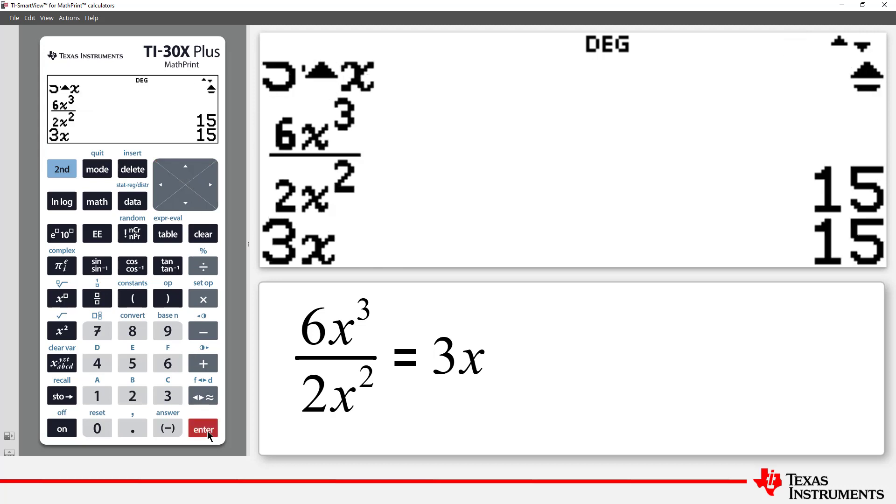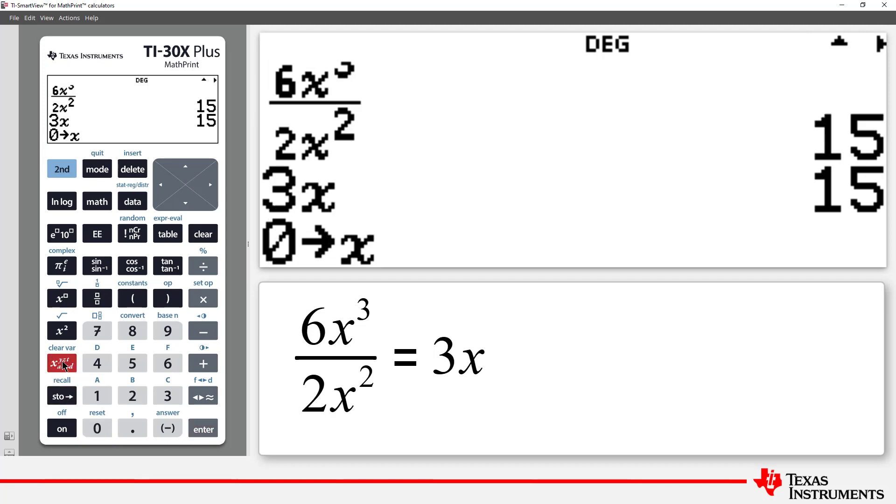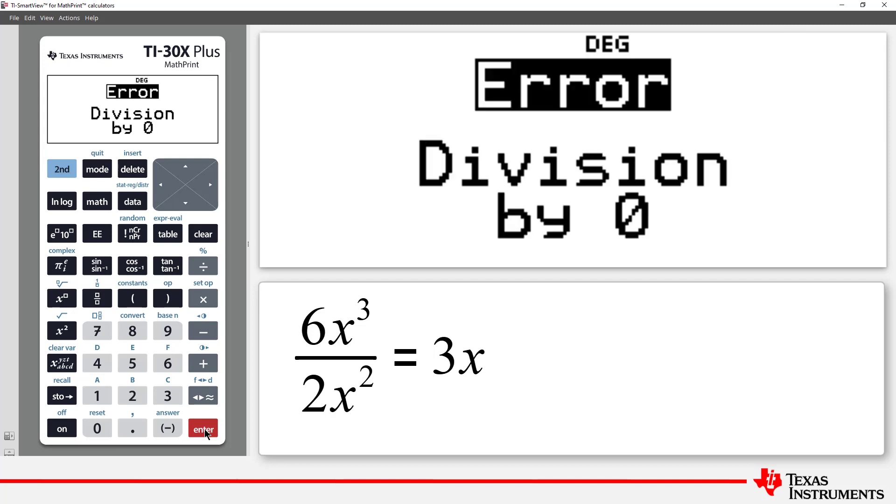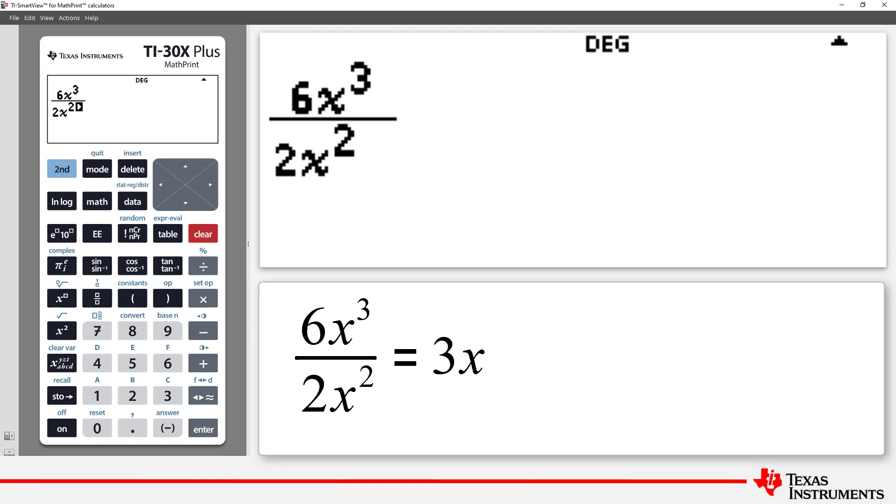But what happens if we substitute 0 in for x? We get an error: division by 0. So 6x cubed over 2x squared does simplify to 3x as long as x is not equal to 0.